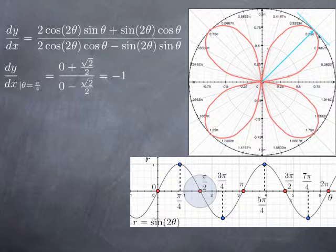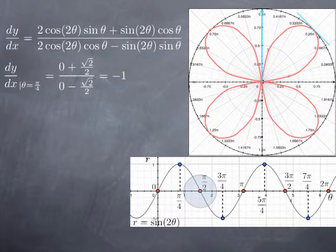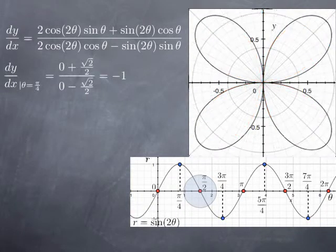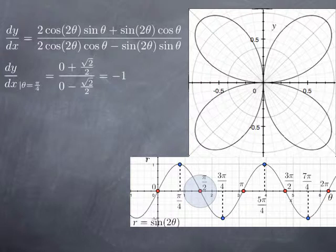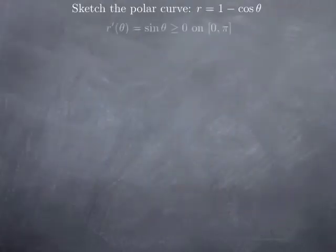If we go to the value of the angle pi over 2, we're going back to the pole, and therefore theta equal pi over 2, which is the y-axis, is tangent to the curve — so we're going back with a vertical tangent. We could go around and check all of the tangent lines, but here you understand the principle. Smoothing things out, this is what we would get.